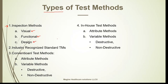The second category is industry recognized standard test methods. The third category is conventional test methods, which includes attribute and variable test methods. Variable test methods are further divided into destructive and non-destructive. The fourth category is in-house test methods, which also includes attribute and variable methods, with variable methods divided into destructive and non-destructive.